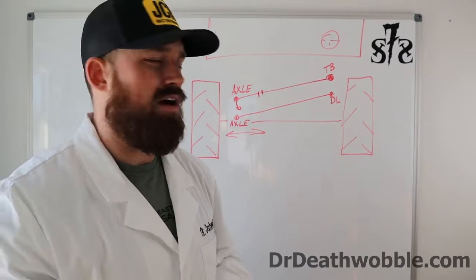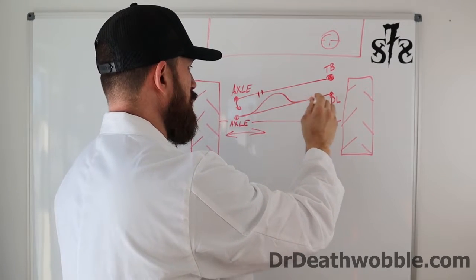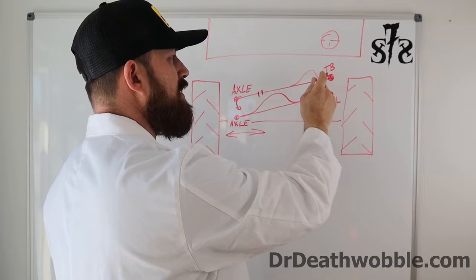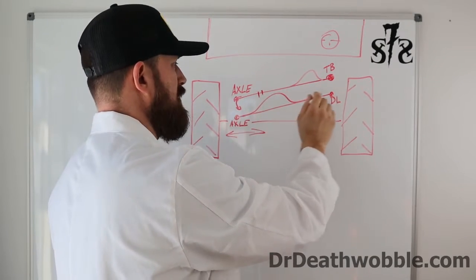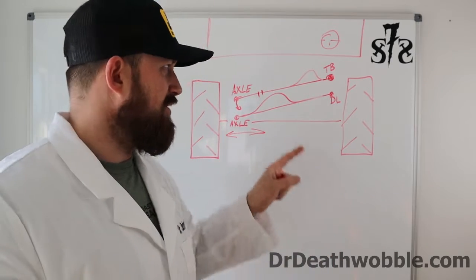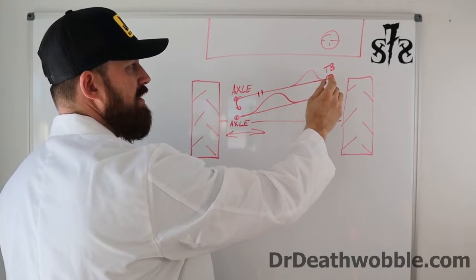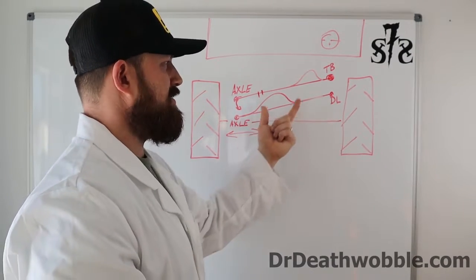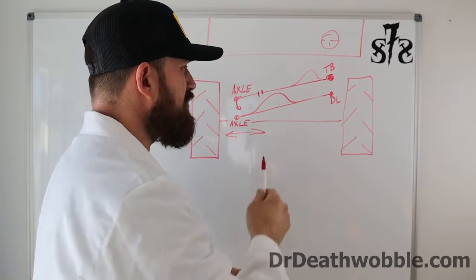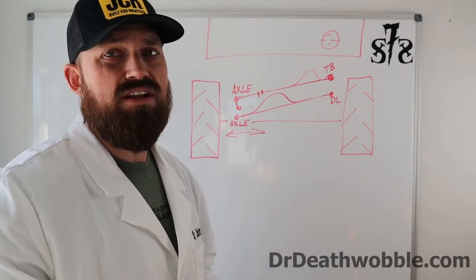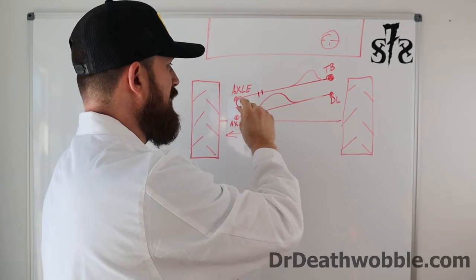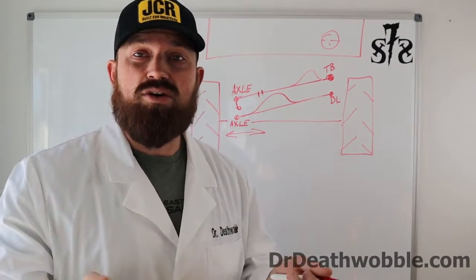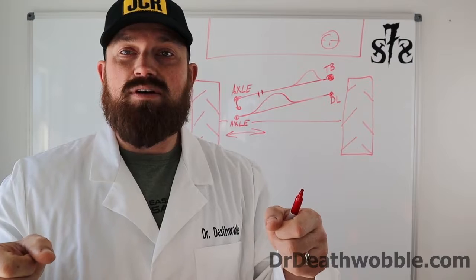We're not worried about what shape they are — a drag link can have a bend in it to go up over the axle. What we're worried about is where they mount, because they work on the same pivot. So they're going to have to be parallel. You could take a piece of string, hook it from hole to hole, put a digital degree wheel on it, and make sure they're as close to the same angle as possible to avoid bump steer. If they're on different planes and different angles, they're going to pivot differently.